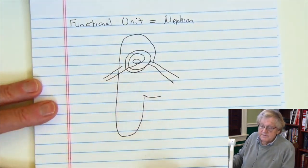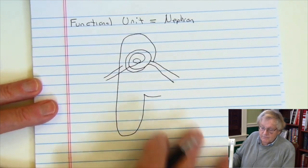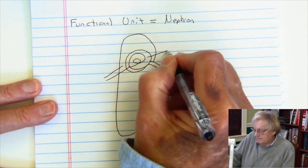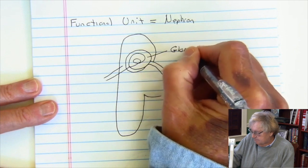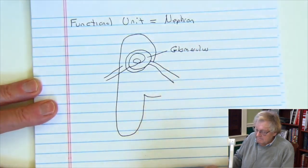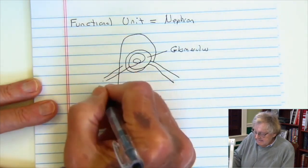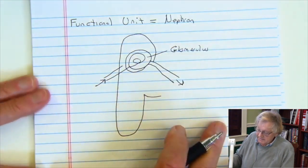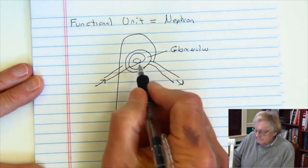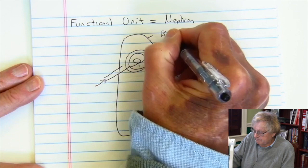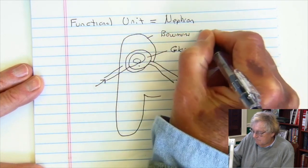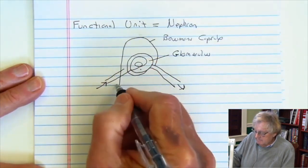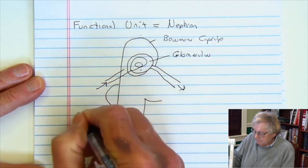Now let's label the portions of the nephron. This portion here is going to be called the glomerulus — the ball of capillaries — with blood coming in and blood coming out of the kidney. There's a glomerulus, something called a Bowman's capsule, and then this region is going to be called the renal tubule.